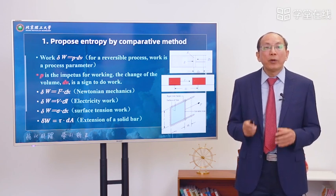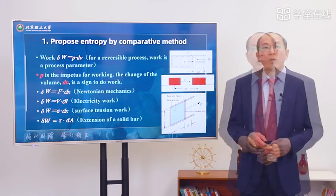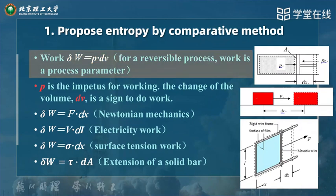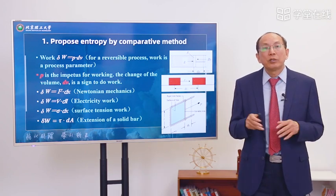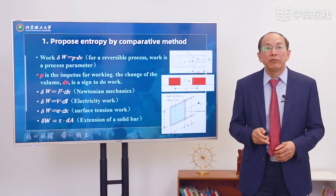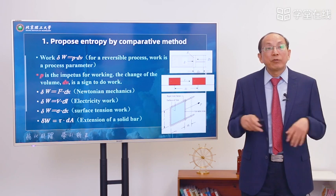The first one: propose entropy by the comparative method. In thermodynamics, we know the expansion work delta w equals p dot dv. For a reversible process, the work is a process parameter. For example, here is a cylinder — the cylinder expansion work is delta w equals p dot dv. This equation style can be found in many places.